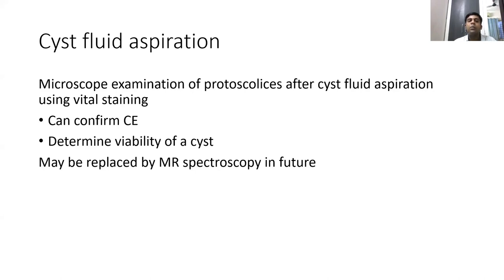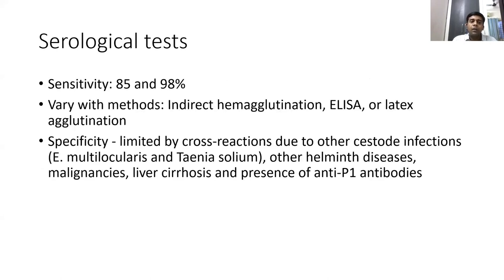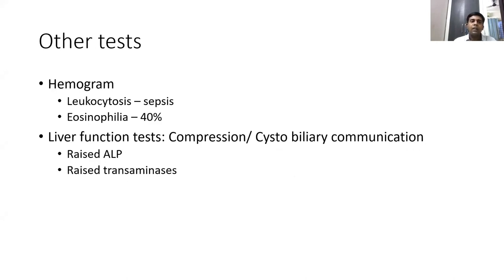MR spectroscopy is a less invasive investigation being studied to assess cyst viability. Serological tests have variable sensitivity and specificity — methodology ranges from indirect haemagglutination to ELISA to latex agglutination, and cross-reactions with other worms reduce specificity. Confirmatory tests like the R5 test and complement fixation test may be needed. Other important tests include a haemogram — eosinophilia is seen in up to 40 percent of cases — and liver function tests, where elevated alkaline phosphatase and transaminases suggest compression or cystobiliary communication with cholangitis.